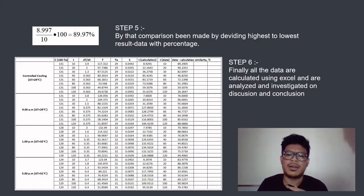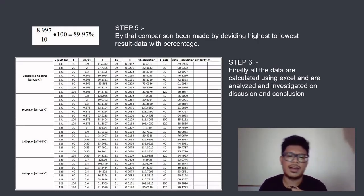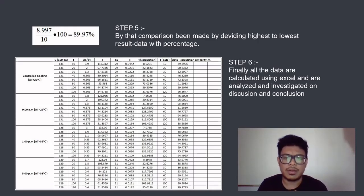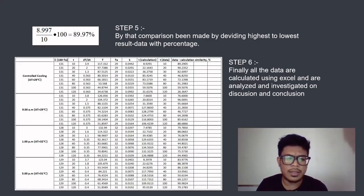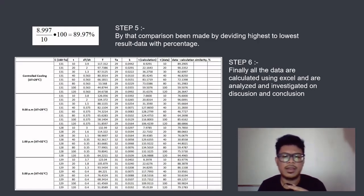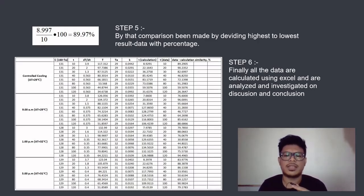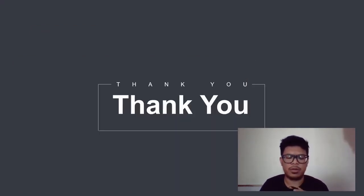A comparison has been made by dividing the highest to lowest result data with percentage, to find whether the similarity is quite high — especially on the early curve of the data, when the time is 1 to 30 minutes. Finally, all calculations are tabulated in Excel, and we can analyze and investigate by further discussion and conclusion. Thank you so much. I will hand the presentation to another member.